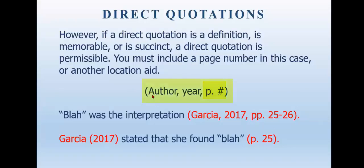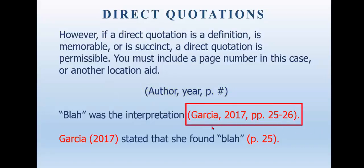So the template for a parenthetical direct quotation is: open parentheses, author's last name, comma, space, year, comma, space, 'p.' period, space, page number, close parentheses. If the quotation spans two pages — say it started on page 25 but didn't end until page 26 — because that is a span of pages, it has to be 'pp.' period, space, then the span, close parentheses, necessary punctuation.